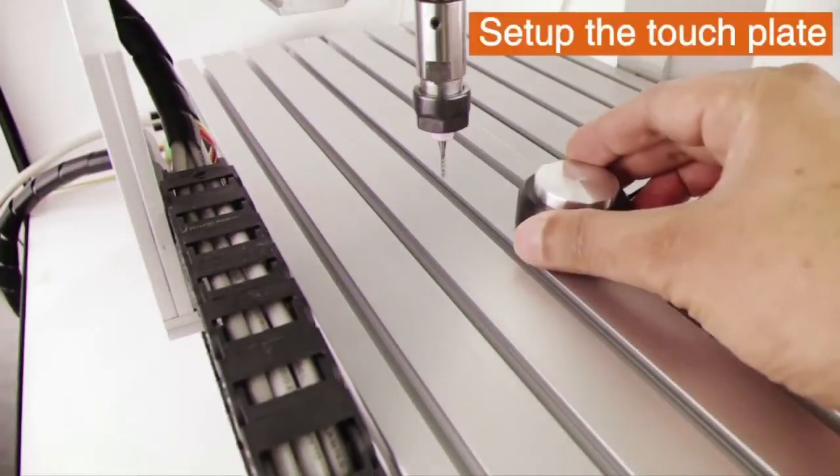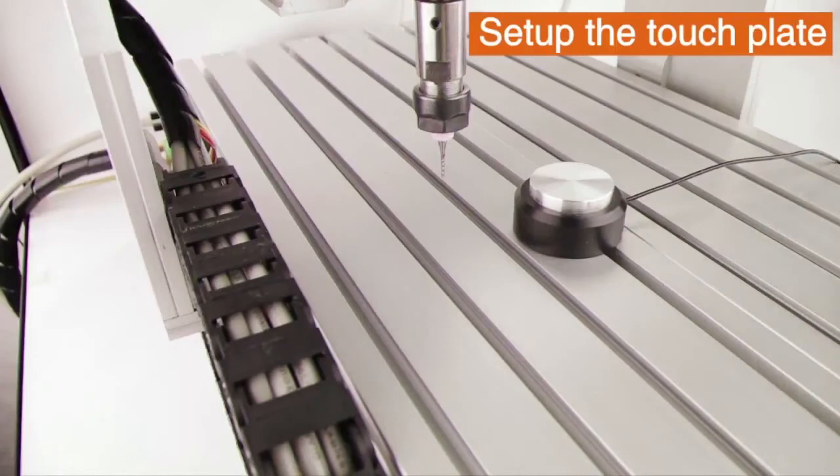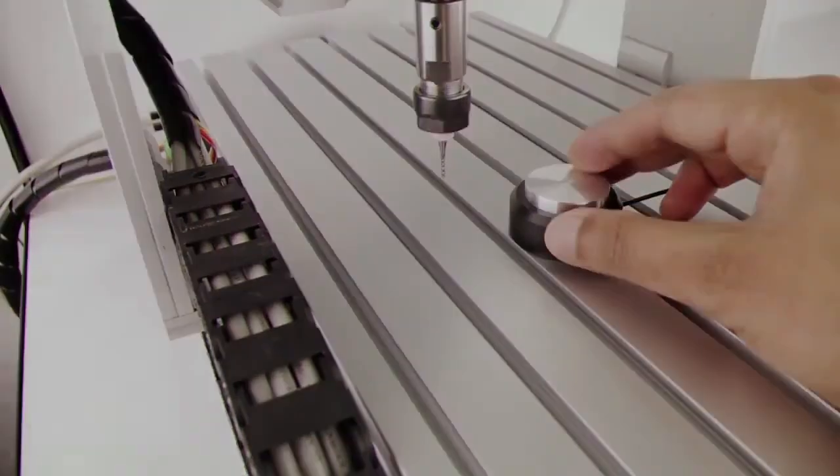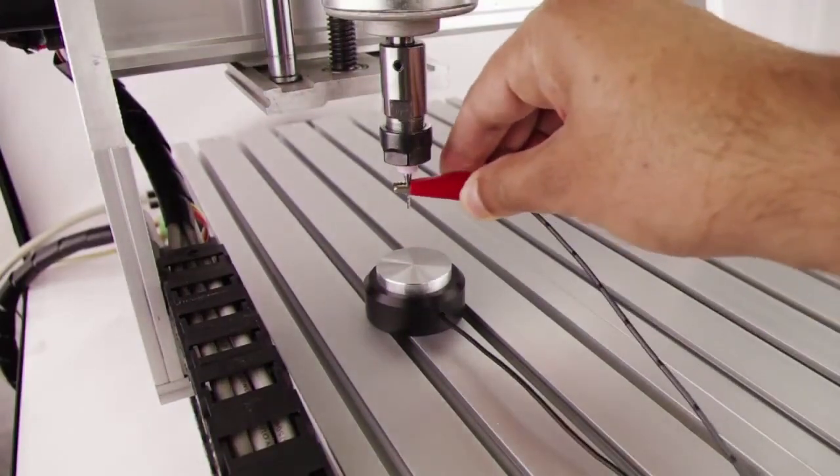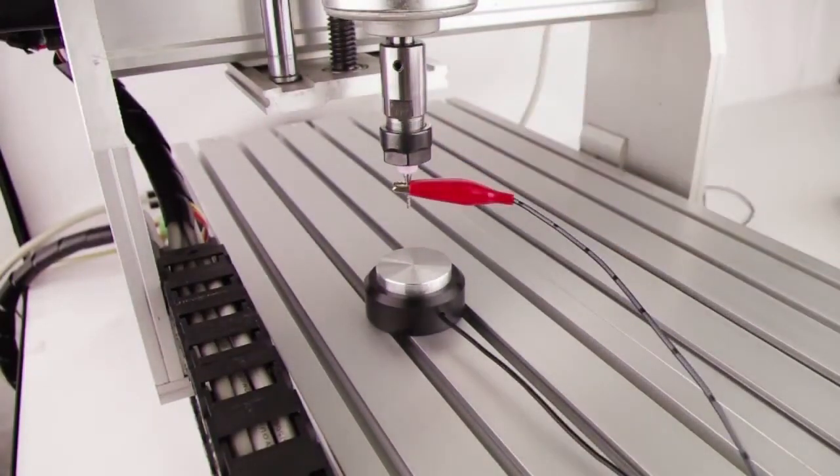If you have a touch off plate like this, you can use this rather than a piece of paper or tool setter to set the heights of the tools. And in the next few steps we will show you how to do that on the Masso. So we have positioned the touch off plate under the tool, and let's put this clip on. So we are all ready to go from the hardware side of things.